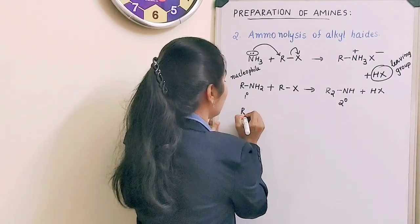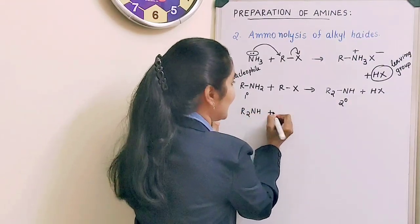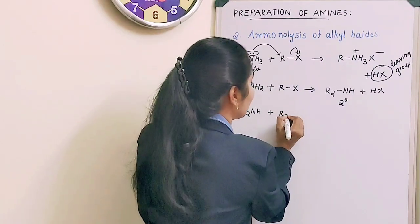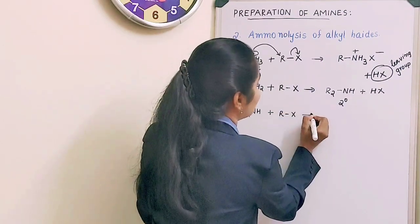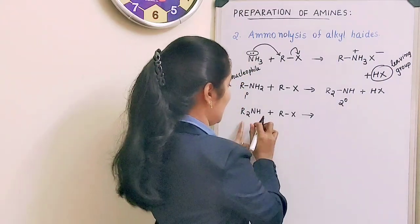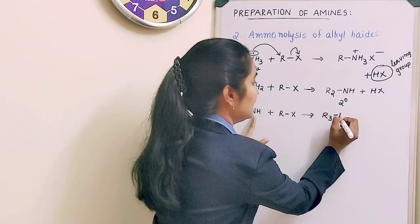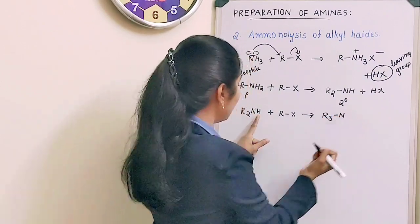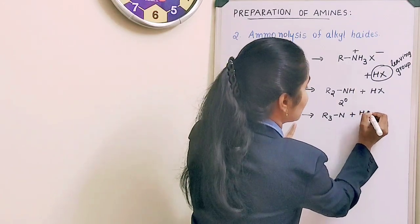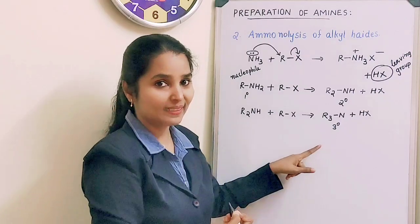The secondary amine R₂NH will again react with alkyl halide RX. One H leaves with X as HX, and you get R₃N — a tertiary amine.